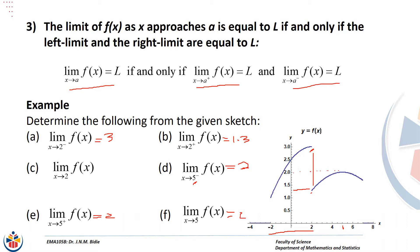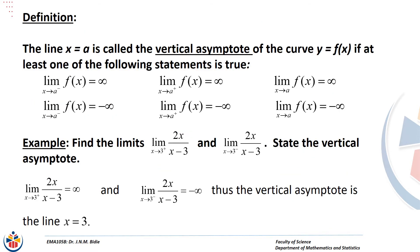Another concept related to limits is the vertical asymptote. The vertical asymptote is the line x = a, as long as one of the following holds: the left limit equals infinity, the right limit equals infinity, the general limit equals infinity, or any of these equal negative infinity. If any of those six statements is true, then there is a vertical asymptote at the line x = a.